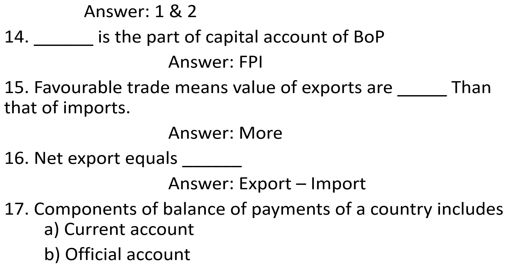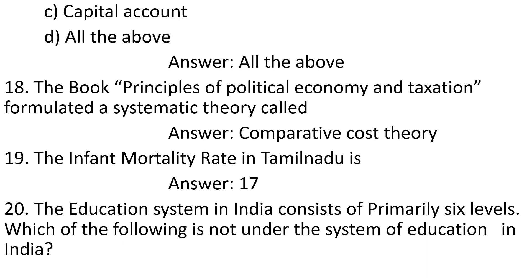Question 17: Components of balance of payments of a country includes: A. Current account. B. Official account. C. Capital account. D. All the above. Answer: All the above. Question 18: The book Principles of Political Economy and Taxation formulated a systematic theory called. Answer: Comparative cost theory.